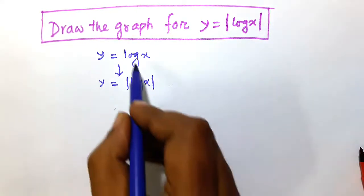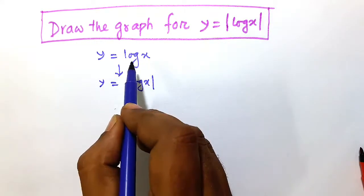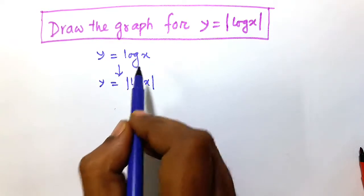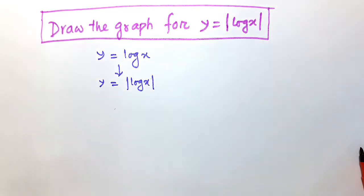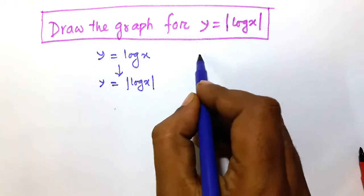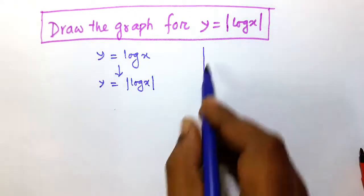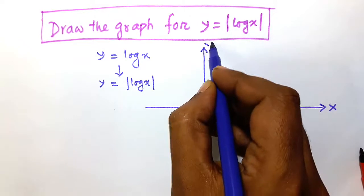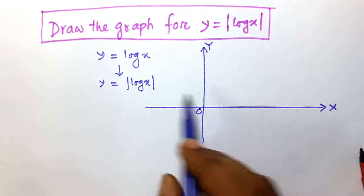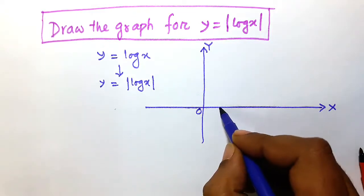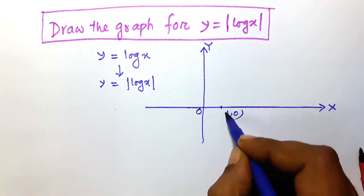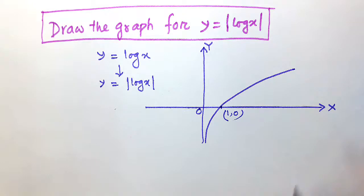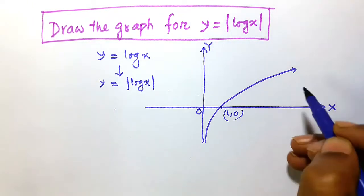The procedure for drawing y is equal to log x is given in the other video on graphing logarithmic functions — links are in the description. This is the y-axis and this is the x-axis. The curve of y is equal to log x will pass through the point one comma zero, and the curve will be shown like this.